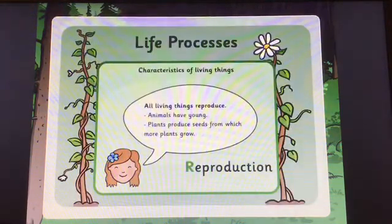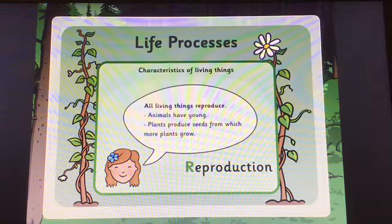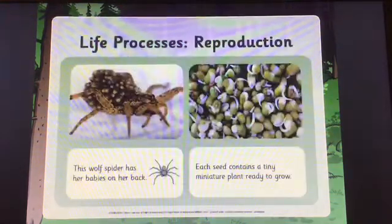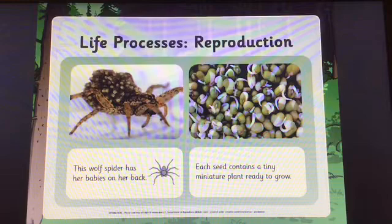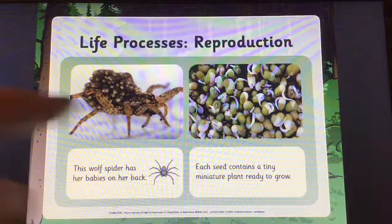The next one is reproduction. All living things reproduce. Animals have young. Plants produce seeds from which more plants grow. This wolf spider has her babies on her back. Each seed contains a tiny miniature plant ready to grow.